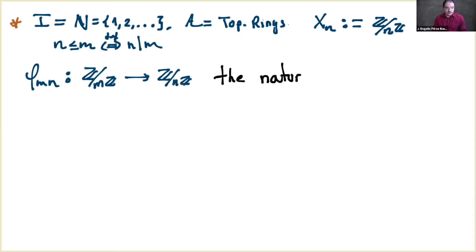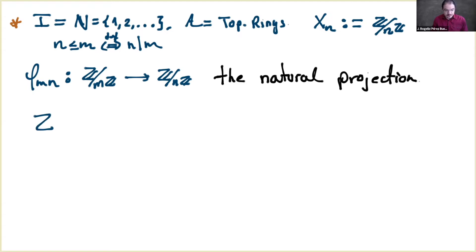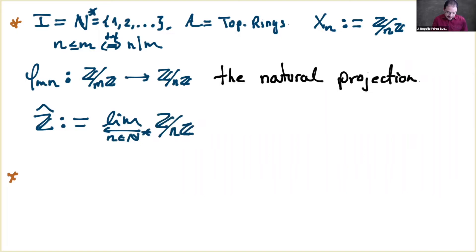The order on the naturals here is not the usual order: we say n ≤ m if and only if n divides m. With this order and the natural projections from ℤ/mℤ to ℤ/nℤ, we get a projective system. Since we have a projective system, we can consider the projective limit. I put a star on this limit to indicate that the order used is not the usual one but the one given by divisibility.